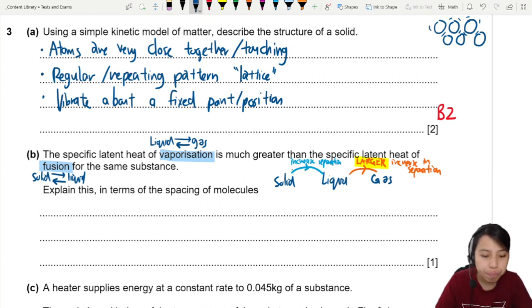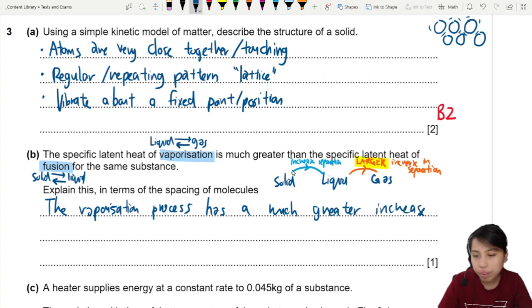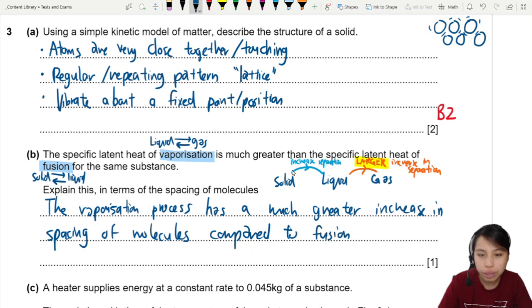So how we can write this out is that, for vaporization, the vaporization process has a much greater increase in the spacing of molecules compared to fusion, which is solid to liquid. The very important word here is, a much greater increase in separation. Not greater separation, greater increase in separation.